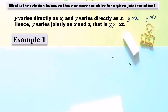Y varies directly as Z means we combine these two variations as one variation, and we call it a joint variation. So Y varies directly as S and Z.